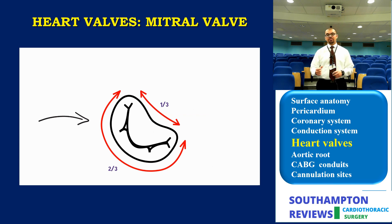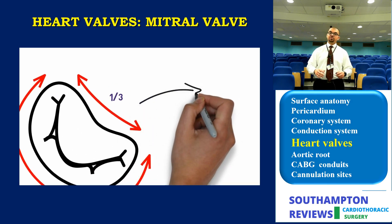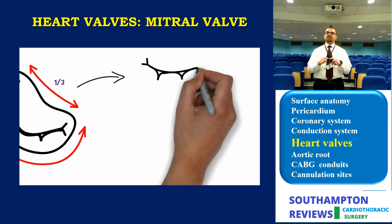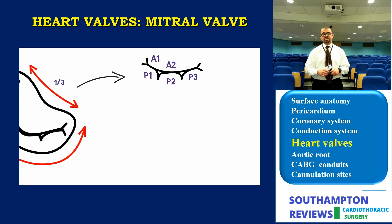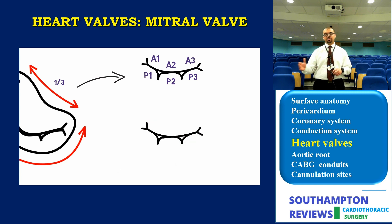This explains why valve prolapse is more common in the posterior leaflet than the anterior, because the anterior leaflet is well supported by fibrous tissue. There are several systems describing the subdivisions of the leaflet. We need a system in order to systematically examine and identify the leaflet problem and hence repair it. The most commonly used is the Carpentier system, dividing into six subdivisions: three posteriorly — P1, P2, P3 — and three anteriorly — A1, A2, A3.